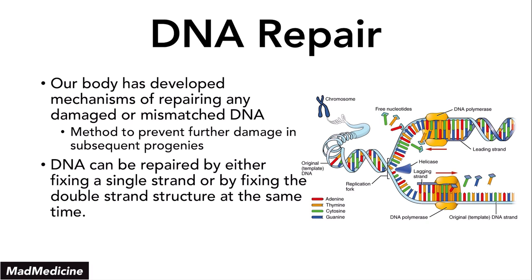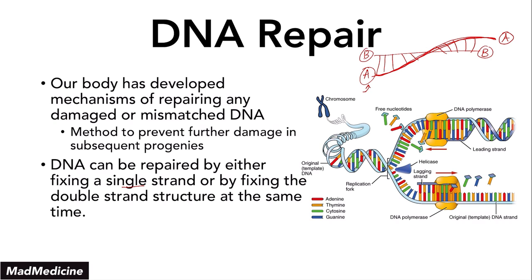DNA can either be repaired by a single-strand fix or a double-strand fix. In terms of your DNA, it's a double helix structure, so you have strand A and strand B. You can fix DNA by using just one strand — for example, using strand A — or you can fix it by addressing both strands at the same time. That's what we mean by single-stranded or double-stranded repair. We'll be discussing the different types of repair for each mechanism.